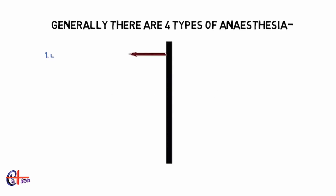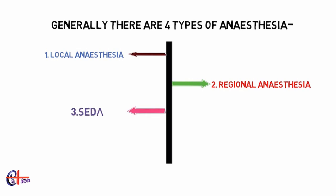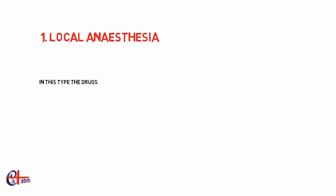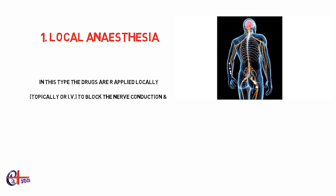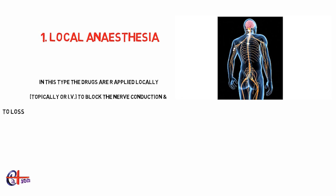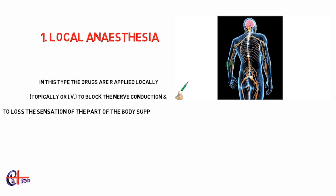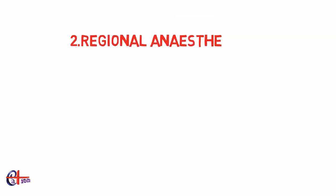Anesthesia means loss of sensation or without consciousness. It involves administration of drugs to numb a part of the body. It is classified into four types: local anesthesia, regional anesthesia, sedation, and general anesthesia. In local anesthesia, anesthetics are applied locally to numb or loss sensation of a small part of the body, achieved by blocking nerve conduction of the particular nerve supplying that area.